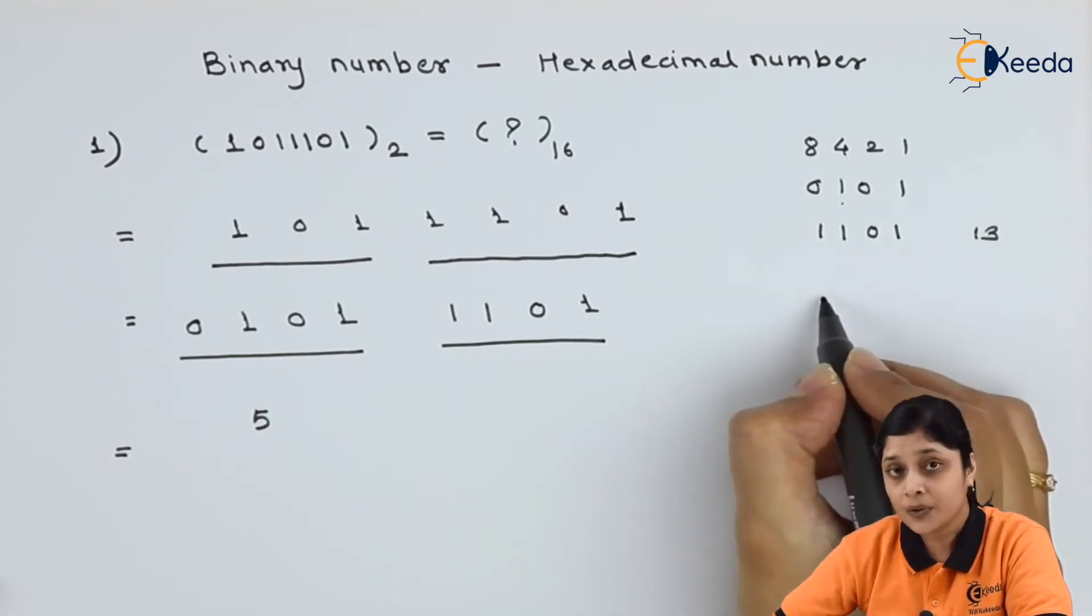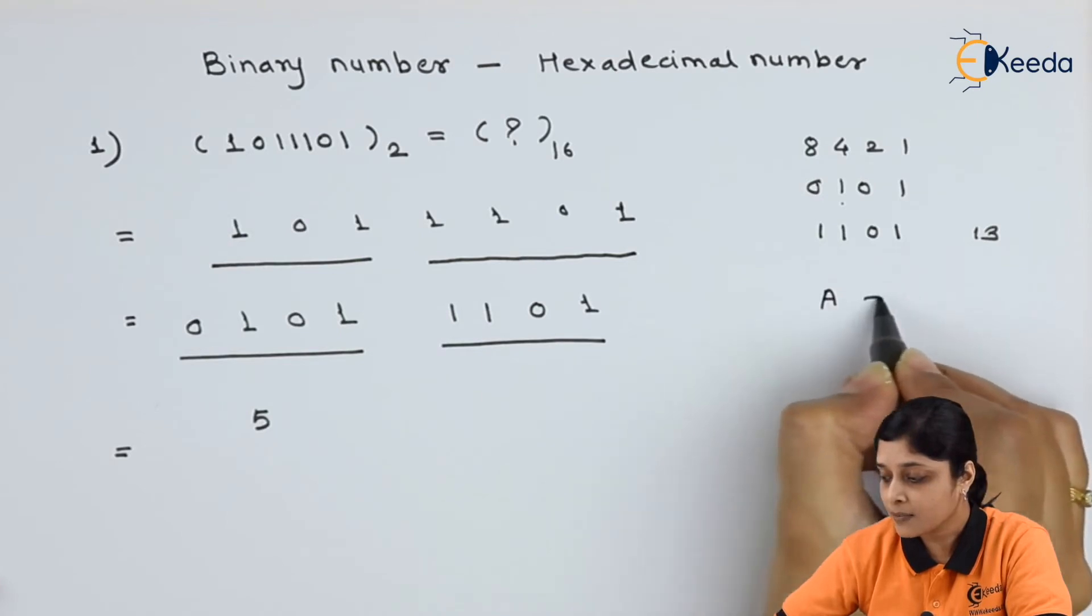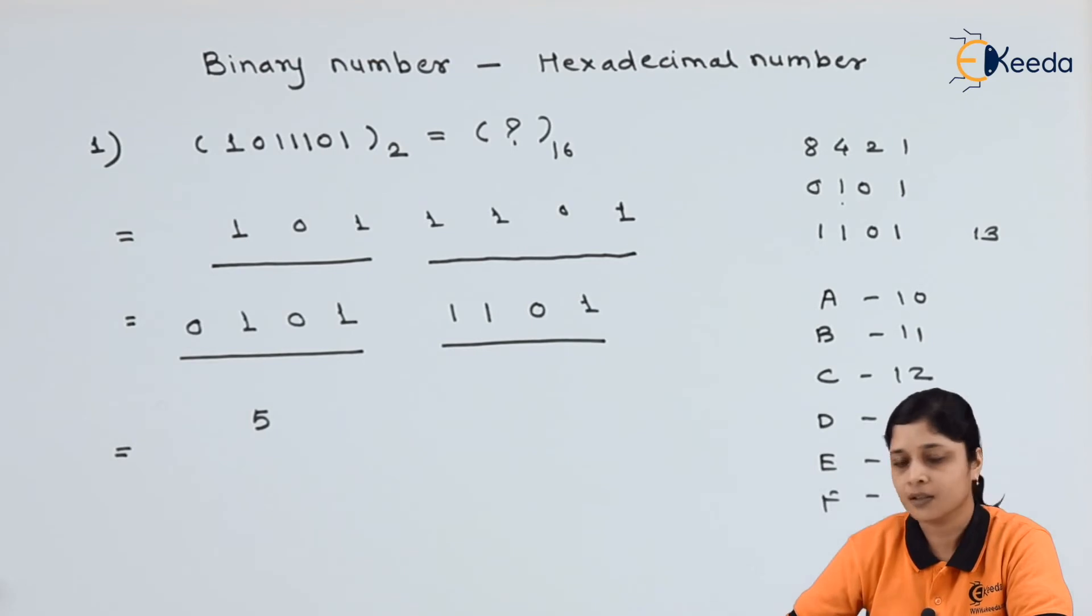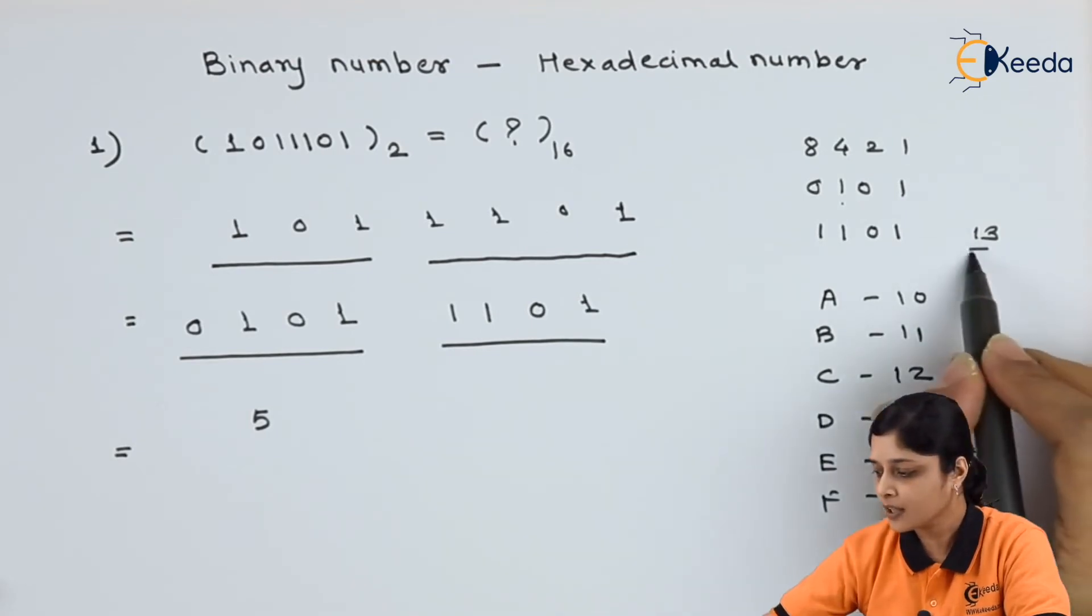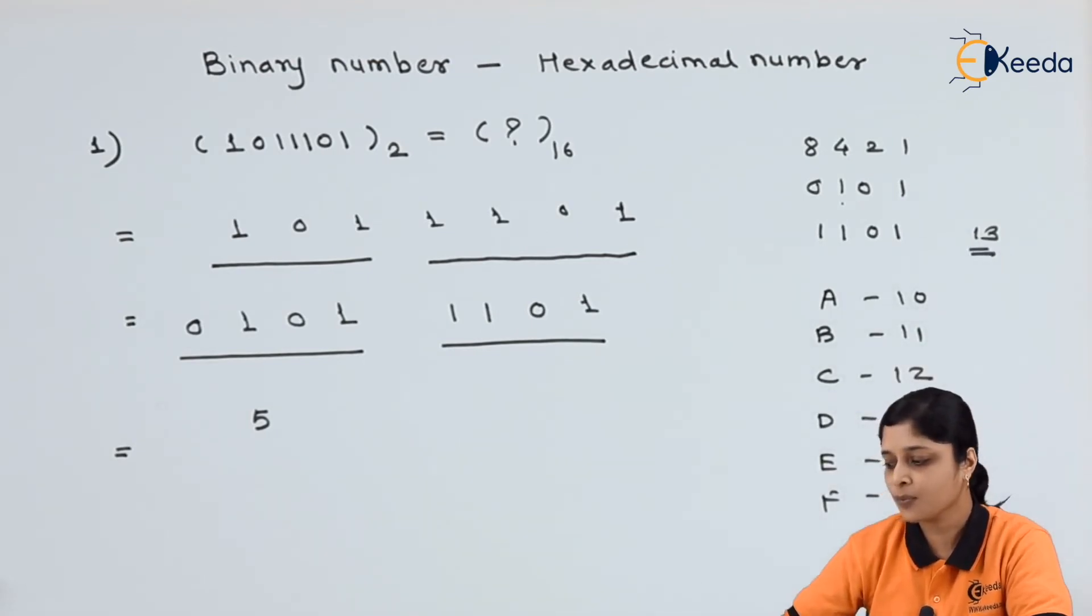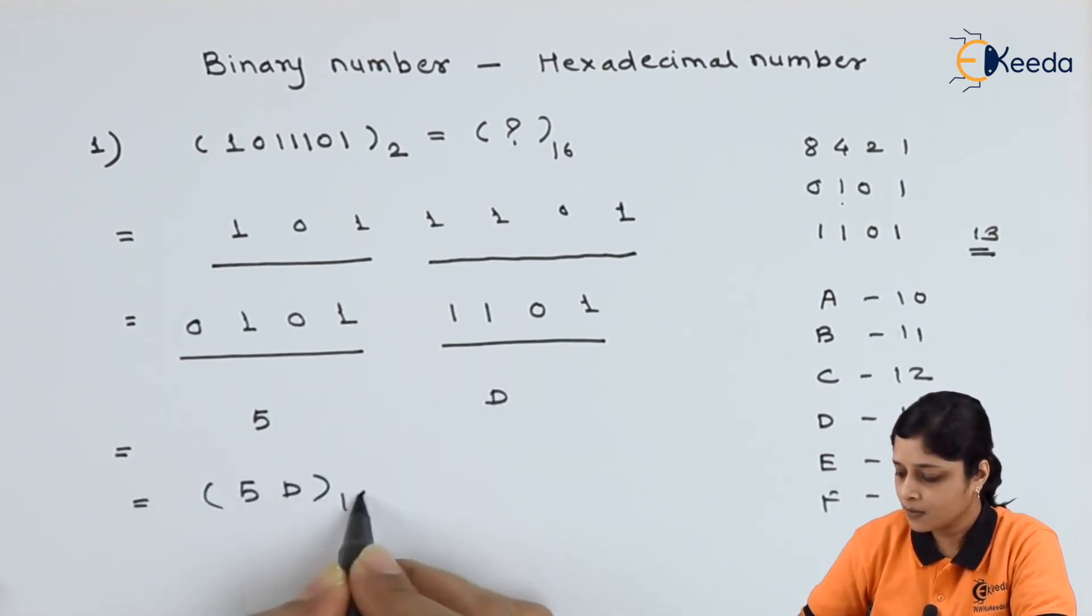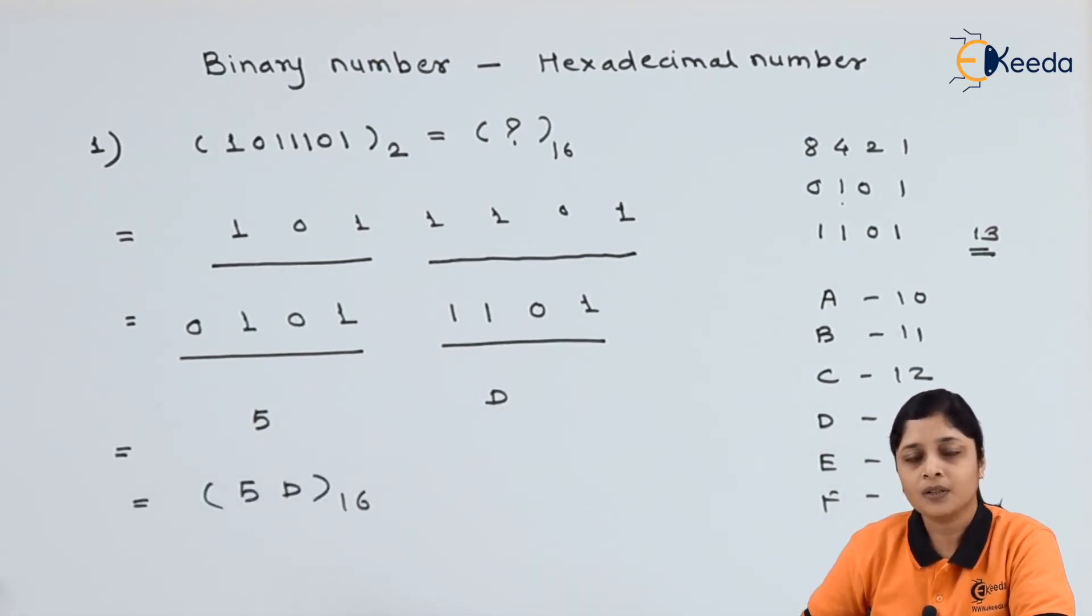Again you have to write for A decimal number is 10, B 11, C 12, D 13, E 14, F 15. So for 13 your representation should be D. So 5D to the base 16 is the final answer.